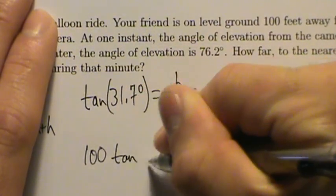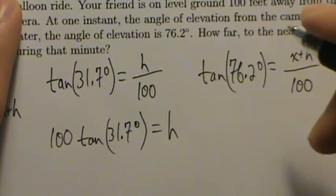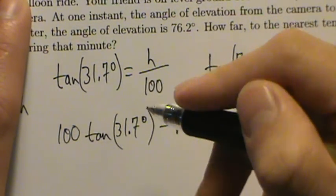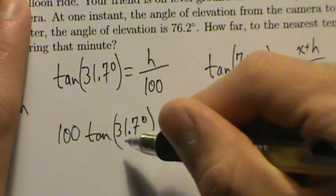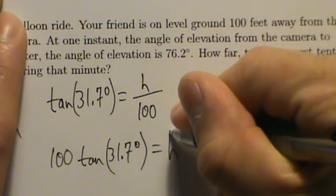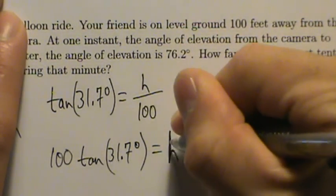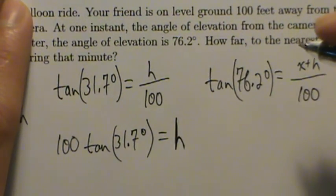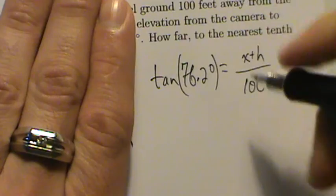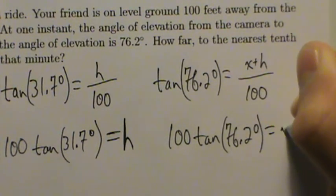Multiplying both sides of the first equation by 100 gives H equals 100 times the tangent of 31.7 degrees. We won't plug this into the calculator yet — just like in previous examples, we want to avoid rounding until the very end so we don't accumulate approximation errors. Doing the same for the second equation gives 100 times the tangent of 76.2 degrees equals X plus H.